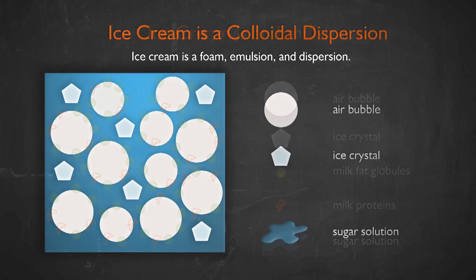It's a colloidal suspension because some of these fat drops are solid-like objects — little solid fat drops — and they sit at the interface of the air bubbles and stabilize them.